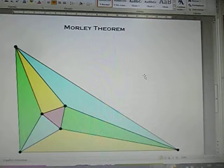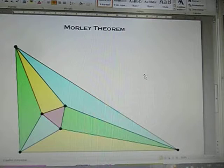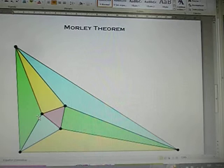In plane geometry, the theorem says that in any triangle, the three points of intersection of the adjacent angle trisectors form an equilateral triangle. This triangle is called the Morley triangle.